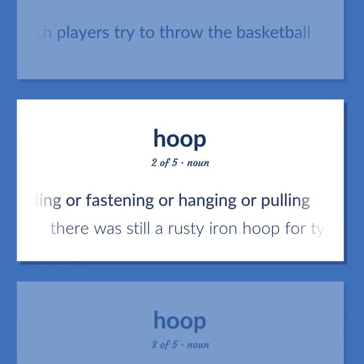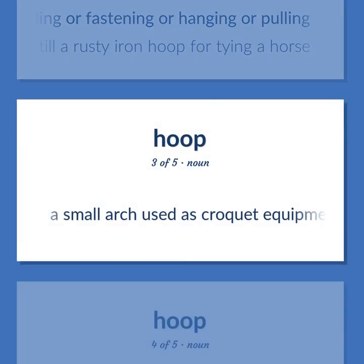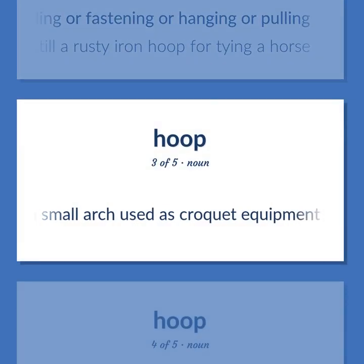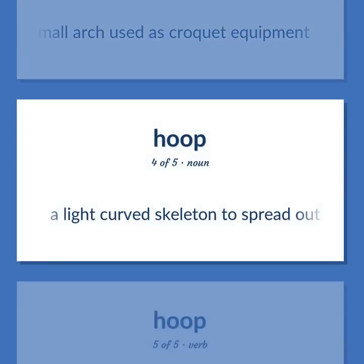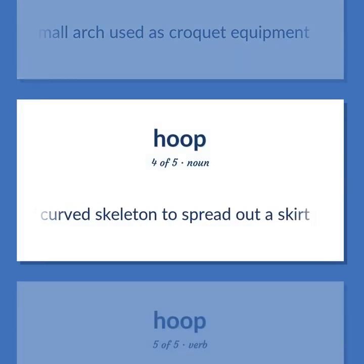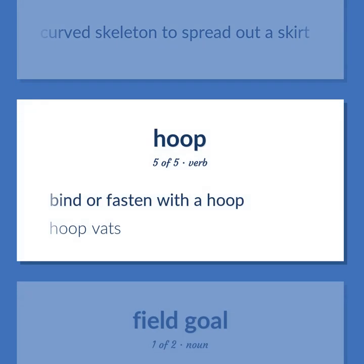There was still a rusty iron hoop for tying a horse. A small arch used as croquet equipment. A light curved skeleton to spread out a skirt. To bind or fasten with a hoop. Hoop vats.